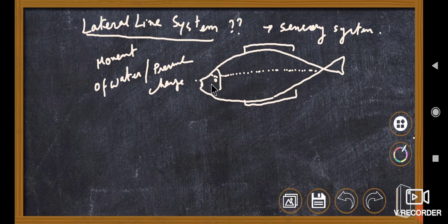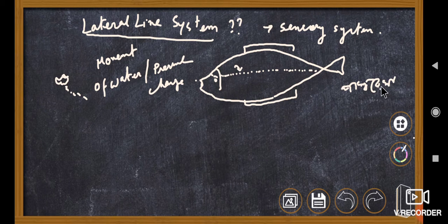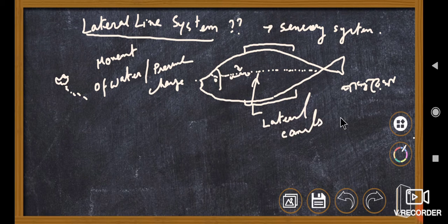This system can sense any change in the direction of water or pressure change. Suppose there is a predator or prey moving in the water — a mechanical vibration and mechanical force is created. With the help of this lateral line system, they are composed of a number of groups known as lateral canals, and they can sense the change in the movement of the water.